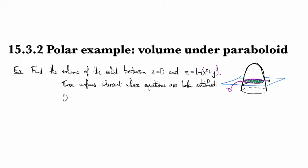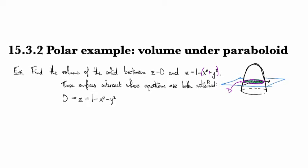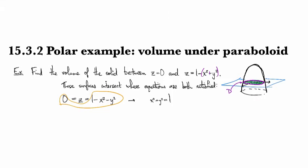So, on the one hand, we have zero is equal to z, and on the other hand, we have z is equal to one minus x squared minus y squared, and so by combining these parts into one equation, I get x squared plus y squared equals one, so this is the unit circle.